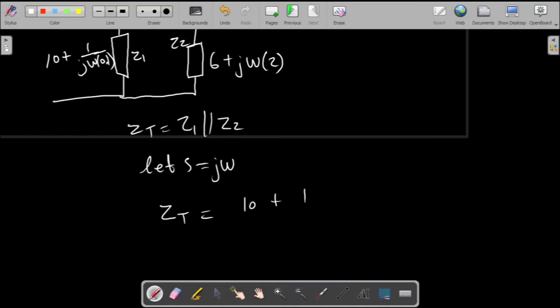To do that, we're going to start doing the computation for Z_T. That would give us ten plus one divided by 0.1. You don't have to leave the 0.5 there. 0.1 divided by 0.1 is ten, and we can divide that by s. Then this is going to be multiplied by the other one, six plus 2s.